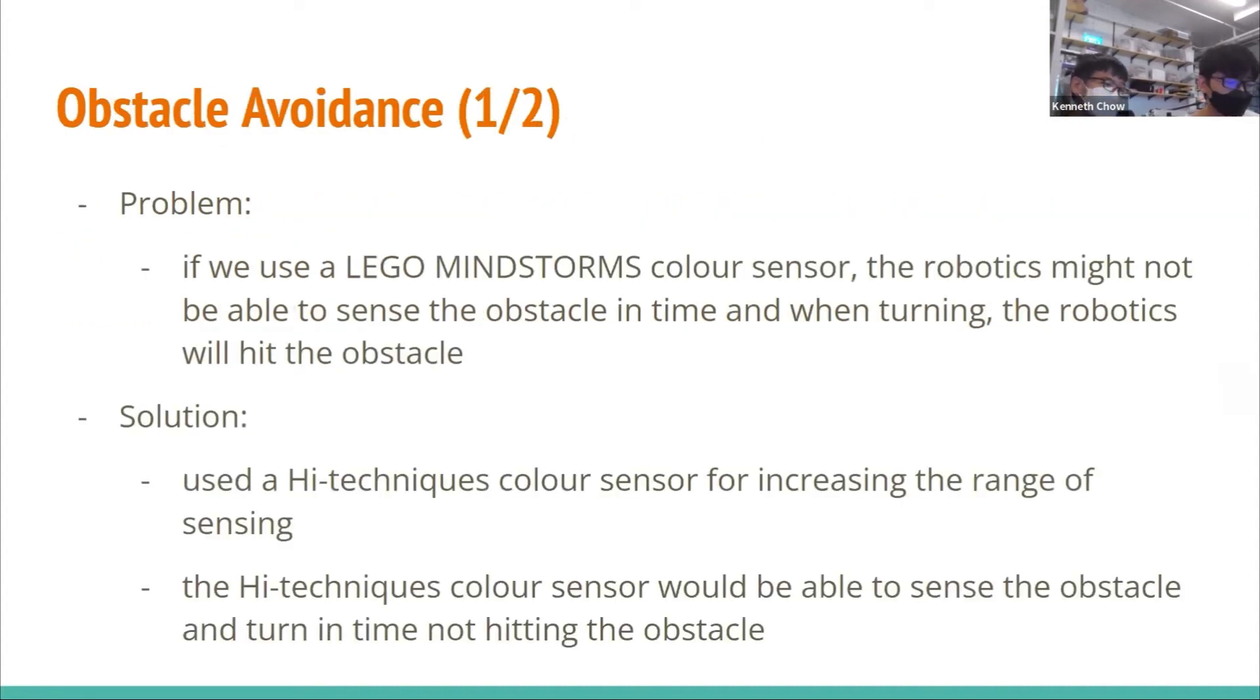At first, there was a problem with obstacle avoidance. If we use a Lego Mindstorms color sensor, the robot might not be able to sense the obstacle in time, and when turning, the robot would hit the obstacle. Knowing this problem, we used a Hi-technic color sensor, increasing the range of sensing. The sensor will also be able to sense the obstacle and turn in time, avoiding the obstacle.